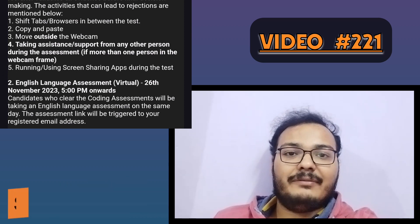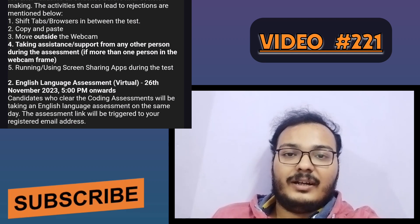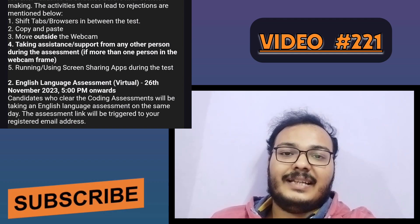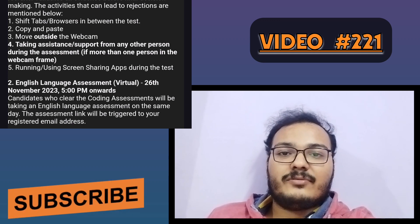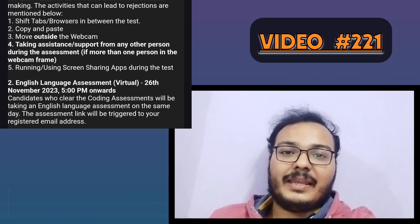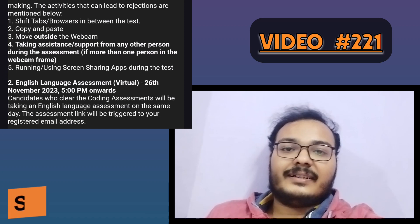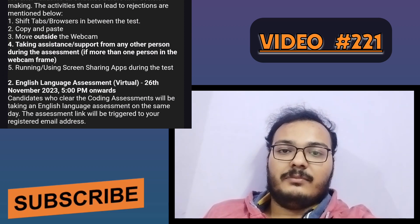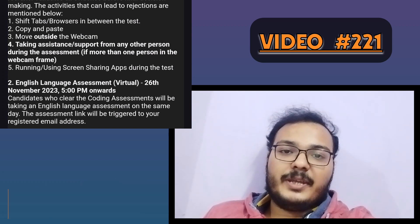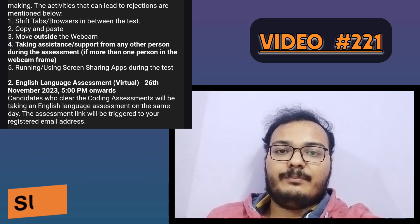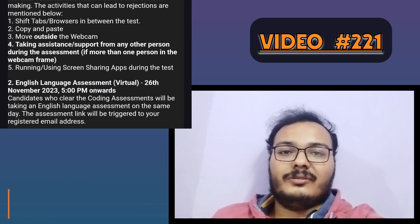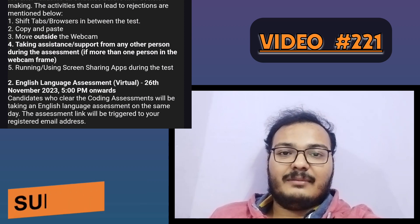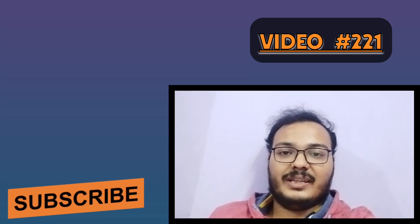Those who clear the coding round will receive another mail with a link for the next exam, which is going to be an English language test only. That English test will happen on the same day — 26 November — at 5 PM. So on 26 November, the coding exam is at 12 PM and the English language assessment is at 5 PM. Only those who clear the coding assessment will get the exam link via mail.